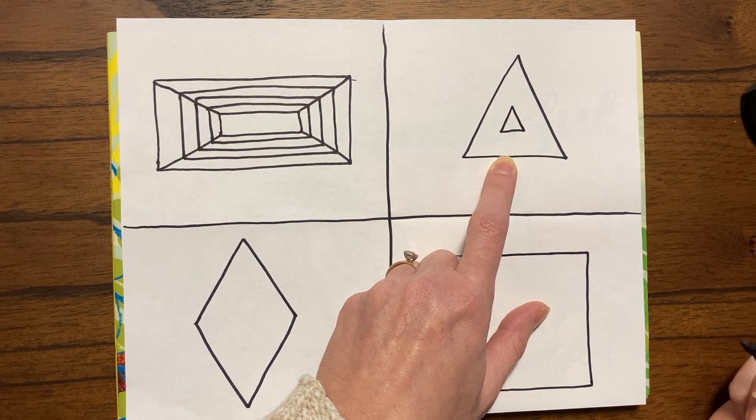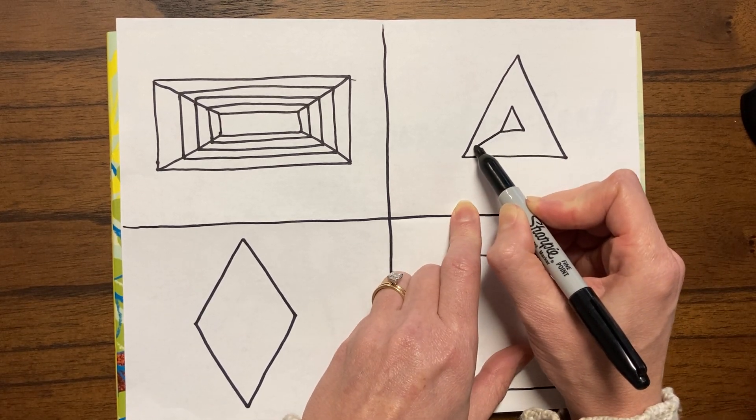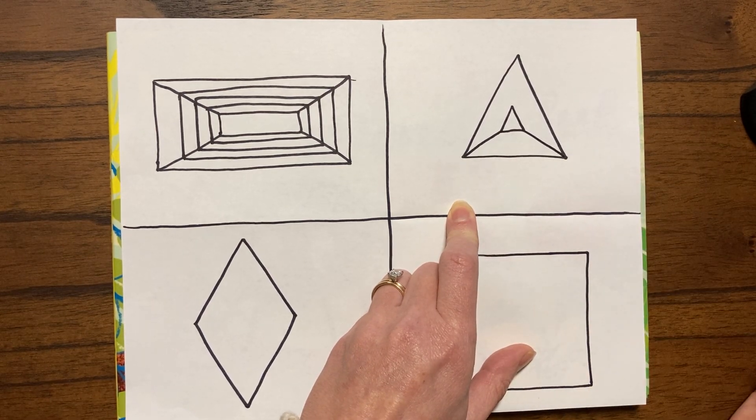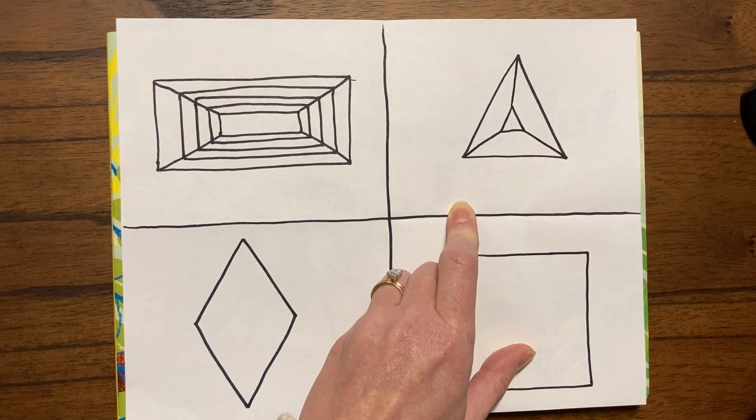And then we connect corners. So I see a corner and I'm going to draw it out there. I see a corner. I'm going to draw it out there. I see a corner. I'm going to draw it out there.